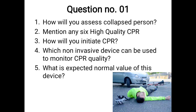The second question: mention any six features of high-quality CPR. You can write: push hard and fast, rate should be 100 to 120 beats per minute, depth one-third of chest diameter or five centimeters or two inches, minimize interruptions to less than 10 seconds, allow chest to recoil, ratio of chest compressions to breaths 30:2, and don't hyperventilate the patient.